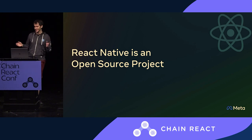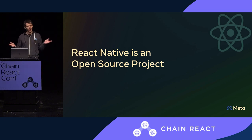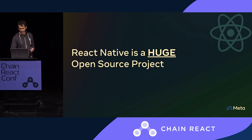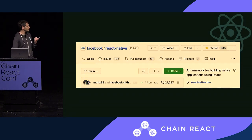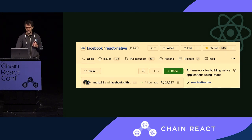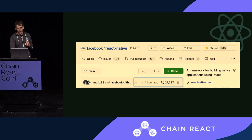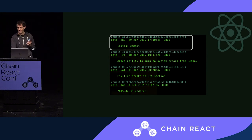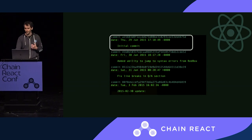React Native is an open source project, as everyone knows. But it's not just that — it's quite a big one. Let's start with the number of commits. We have more than 27,000 commits, which is kind of impressive. The first commit arrived in 2015, so it's like eight years of a framework lifetime, which is a good amount of time.